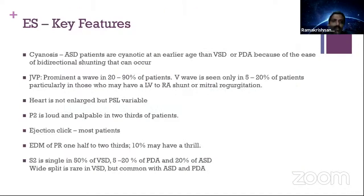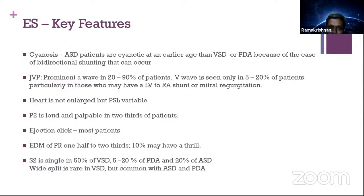Key presentation features in Eisenmenger syndrome: JVP has a prominent A wave in 20–90% of patients. V wave is seen in only 5–10% of patients, except with LV-to-RA shunt or mitral regurgitation. Heart is usually not enlarged. Parasternal impulse may be present. P2 is loud and palpable in two-thirds of patients. Ejection click is present in most patients. Early diastolic murmur of PR is in one-half to two-thirds. 10% can have a thrill. S2 is single in 50% of VSD Eisenmenger, 5–20% of PDA, and 20% of ASD. Wide split is common with ASD.